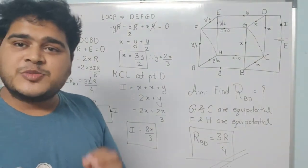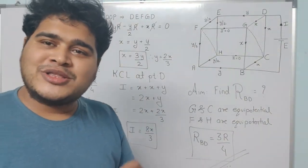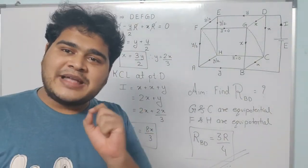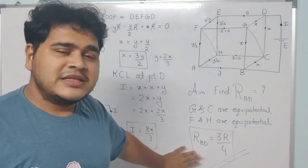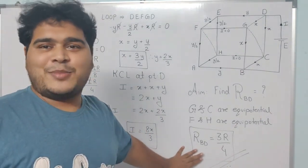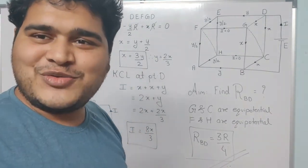So the resistance between the two points on the face diagonal of a cube is 3R/4. That is the final answer.